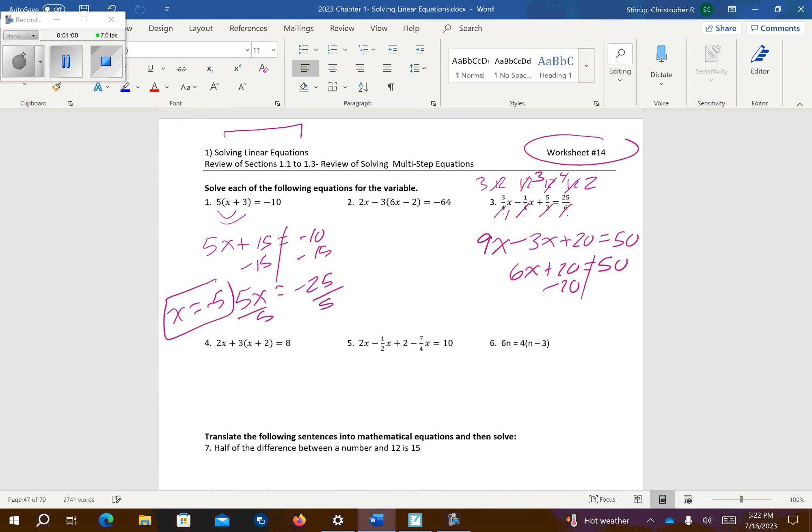So that's going to give me 6x plus 20 is equal to 50. And now we can go ahead and solve it. So subtract 20 from both sides. So I get 6x equals 30. Divide by 6. x equals 5.